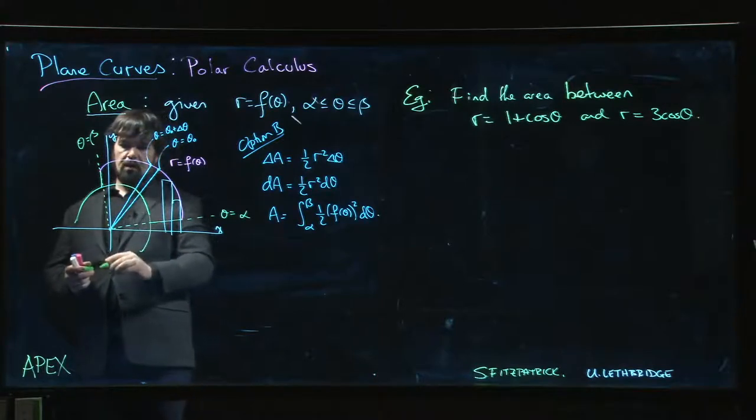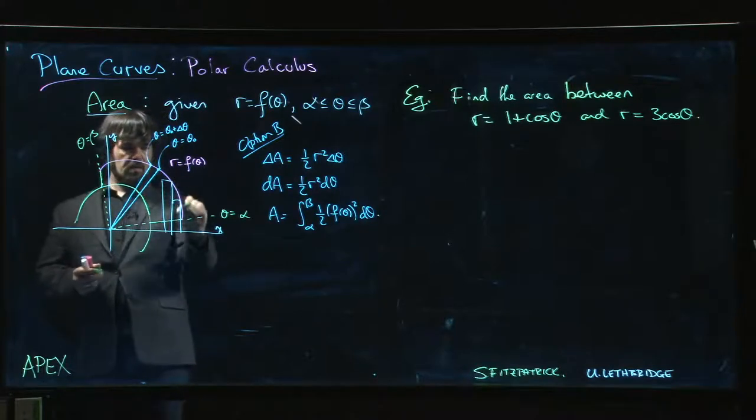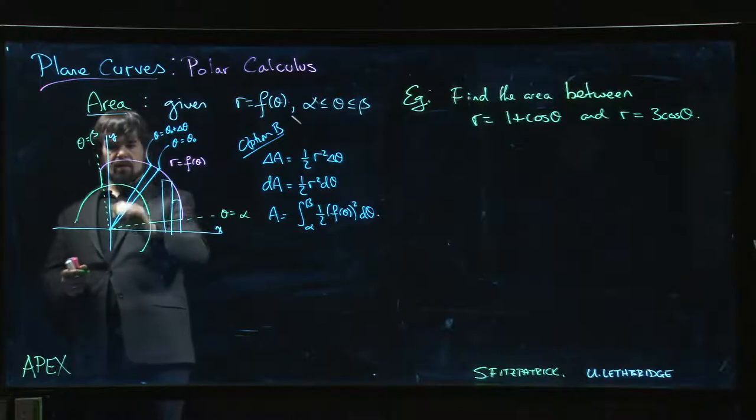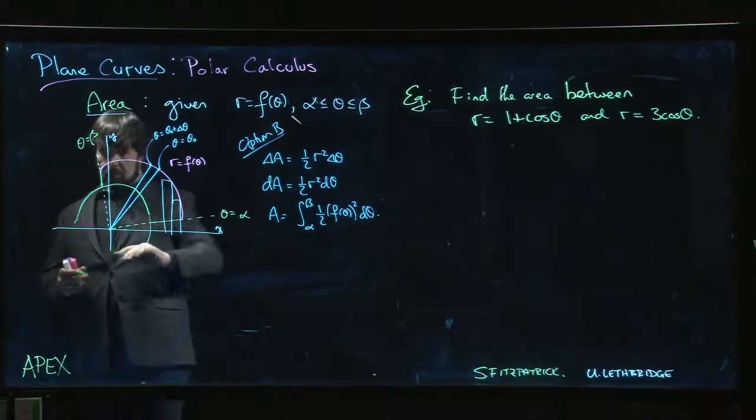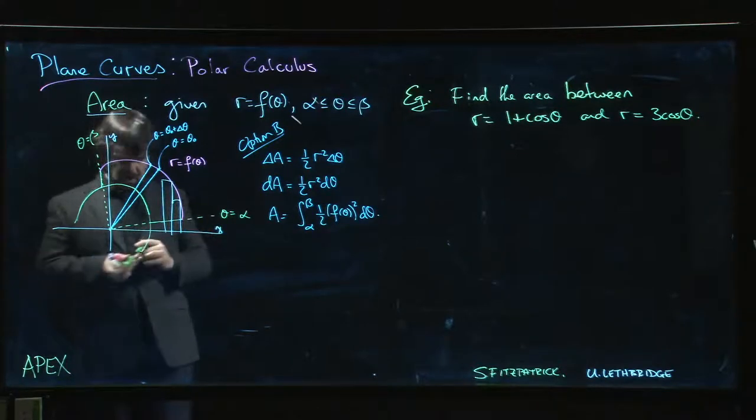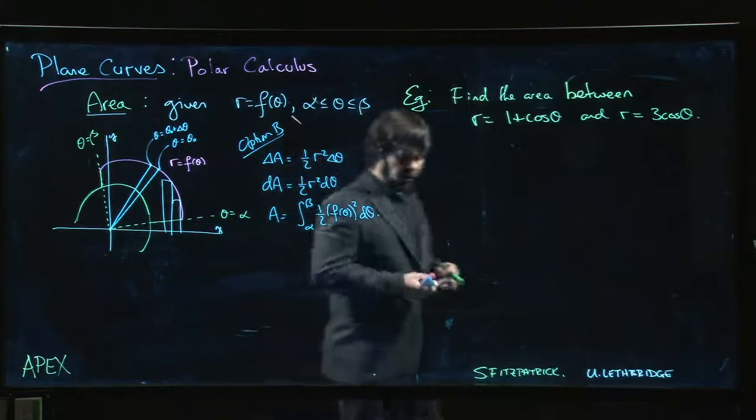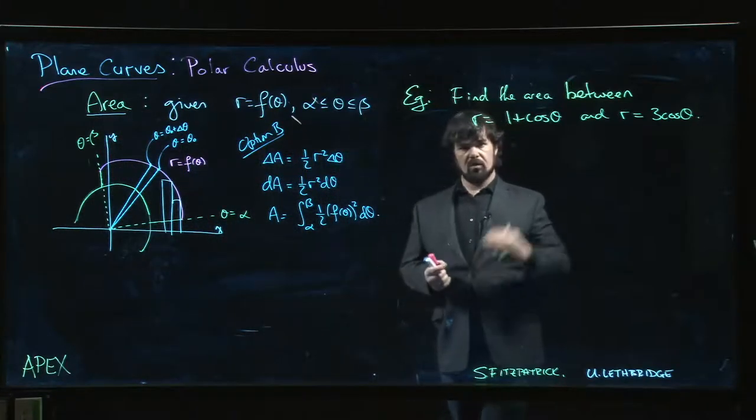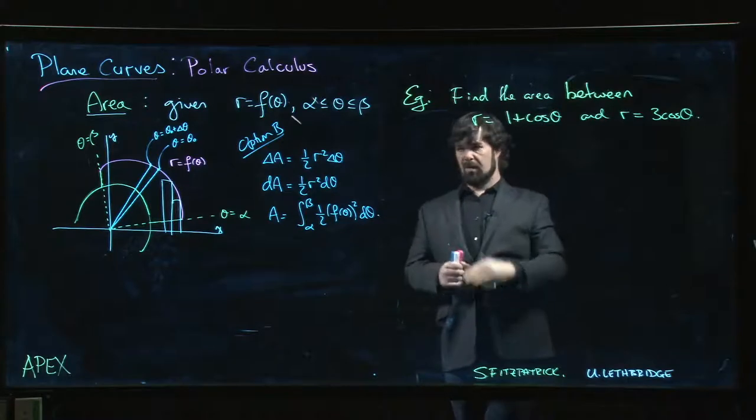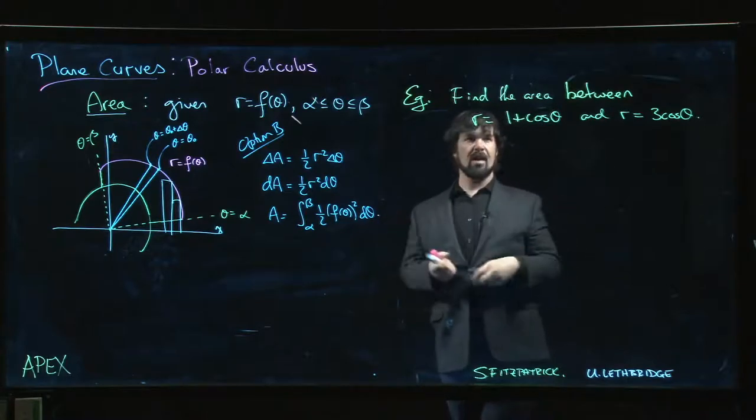And I'm interested in finding the area of this strip between the two curves. What I'm going to do is find the area bounded by the outer curve and then subtract the area bounded by the inner curve. It's just like area between curves in rectangular coordinates. We do top minus bottom. Now it's outer minus inner. It's the exact same idea.